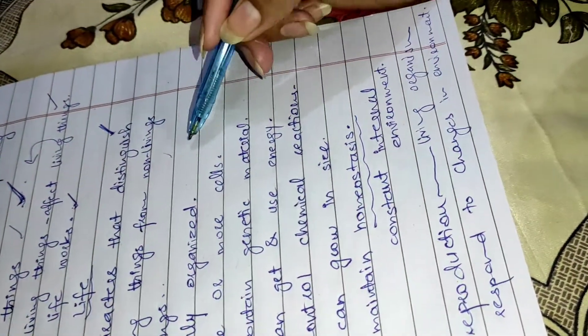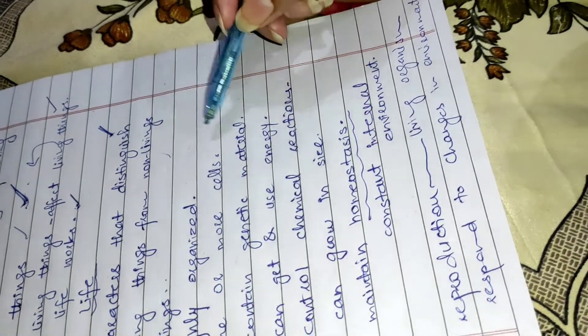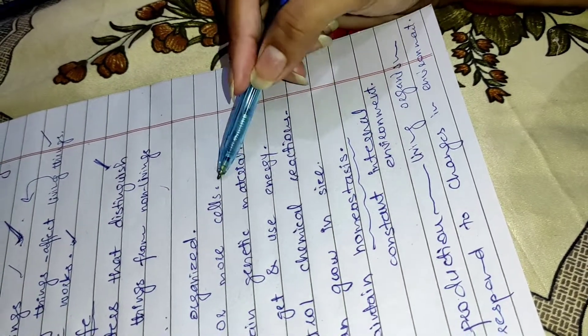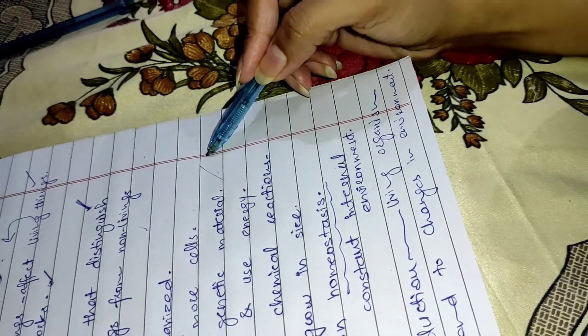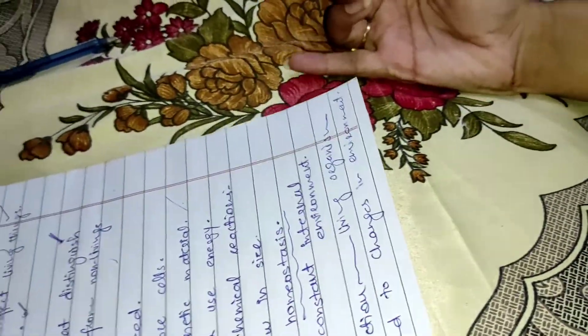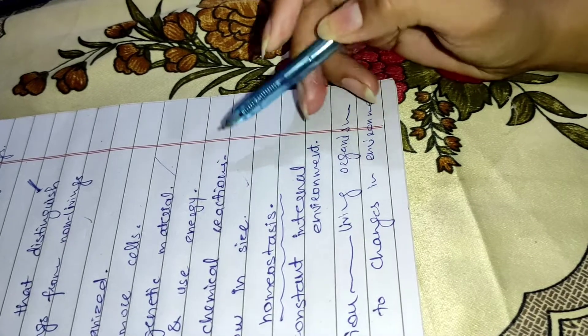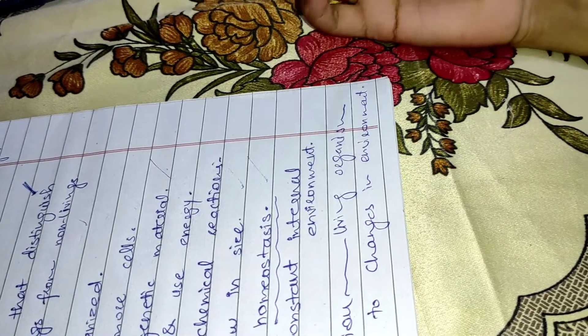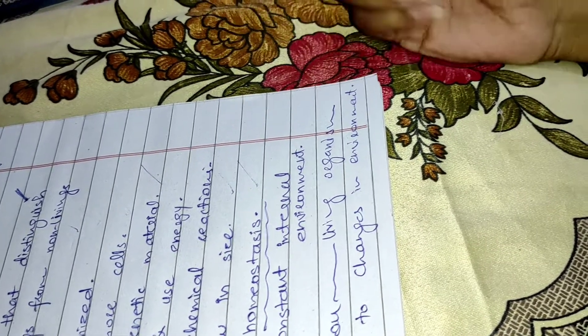The first one is that it is highly organized, living organism means that life is highly organized. More than one cell or one cell. The next one is that they can get and use energy. Next is that they control different chemical reactions which takes place in their body. And that they grow in size, homeostasis, maintain their body.